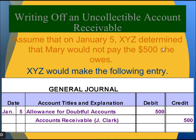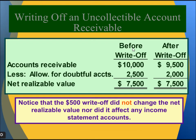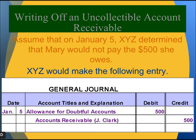Example: On January 5th, XYZ determined that Mary would not pay the $500 she owes. XYZ will make the following entry: debit allowance for doubtful accounts $500, and credit accounts receivable $500. This is how we write off an uncollectable account receivable.